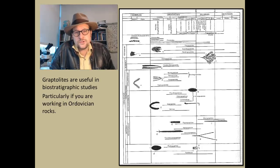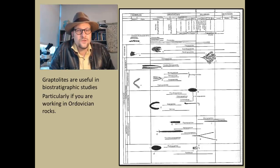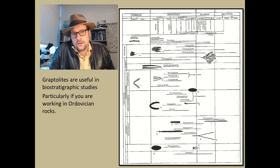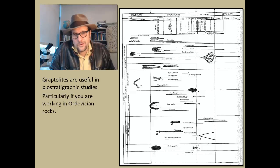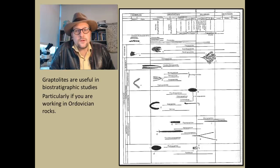Graptolites are known from the Cambrian to Devonian, and the Ordovician was a time of great diversity of graptolites. They were particularly well represented in many Ordovician sites, especially in black shales that hadn't produced many shelled calcium carbonate creatures. Graptolites became a very important biostratigraphic index for rocks in the Ordovician. They go extinct at the Devonian, but are very important if you're working in the early Paleozoic, principally in strata between the Cambrian and Silurian.